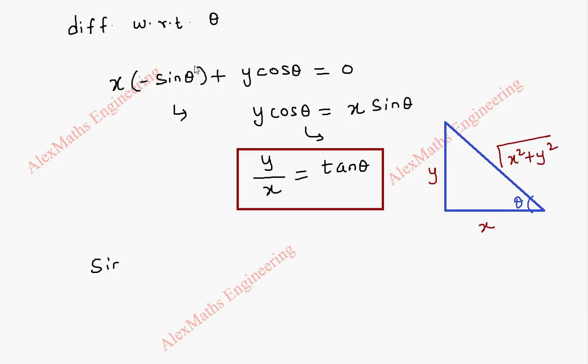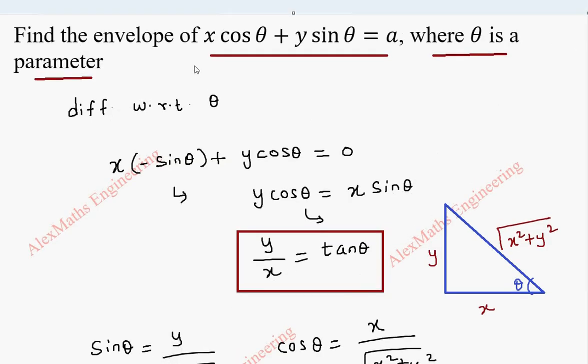I can get the value of sin θ from this, which is opposite over hypotenuse, and the value of cos θ, which is adjacent over hypotenuse. Both these things we are going to substitute in the given curve x cos θ plus y sin θ.